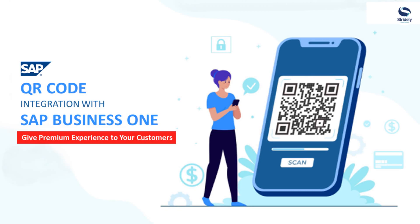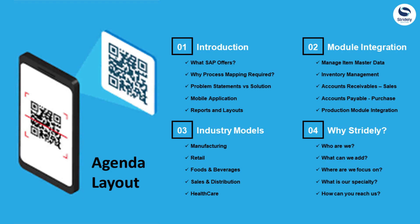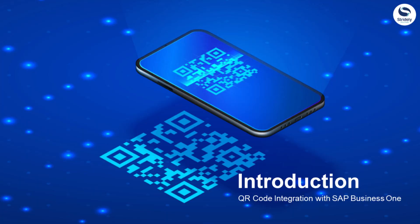Give a premium experience to your customers by enabling QR code integration with SAP Business One. In this video, first we will talk about what SAP offers and why additional mapping is required. Then we will jump into the module integration part, where we will see how many modules can be easily integrated with QR codes. We will also talk about industry-specific processes and, at last, what we can add to do this, which is very rare in the market.